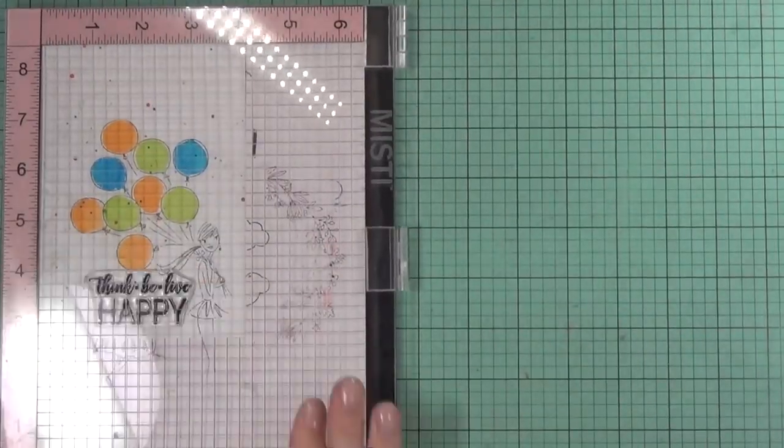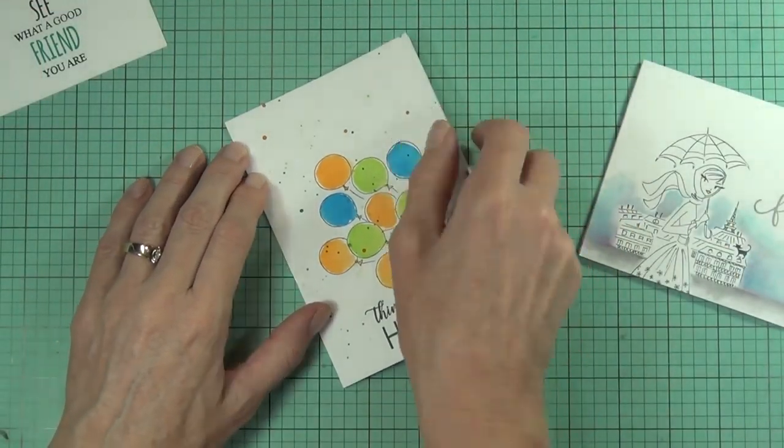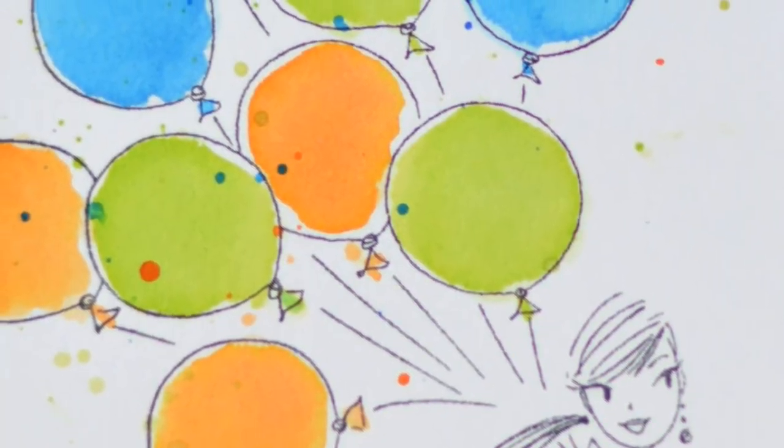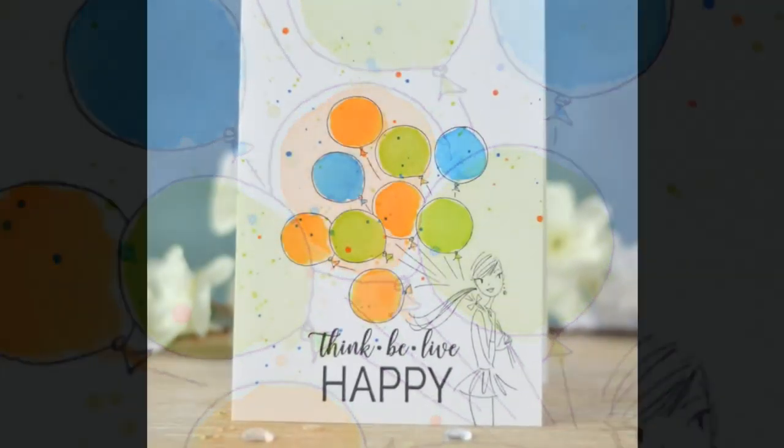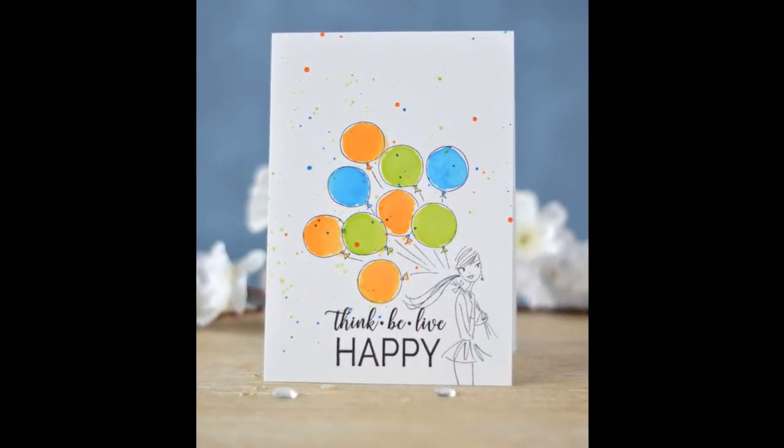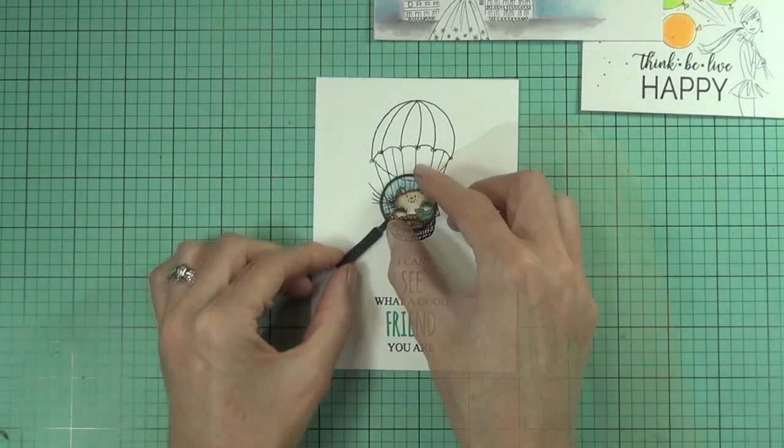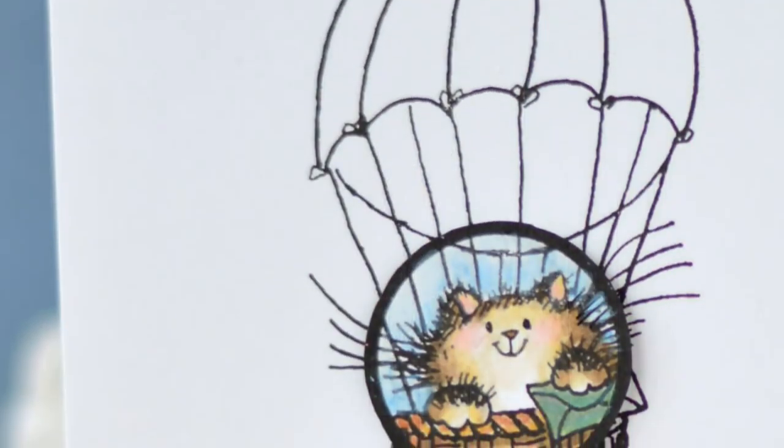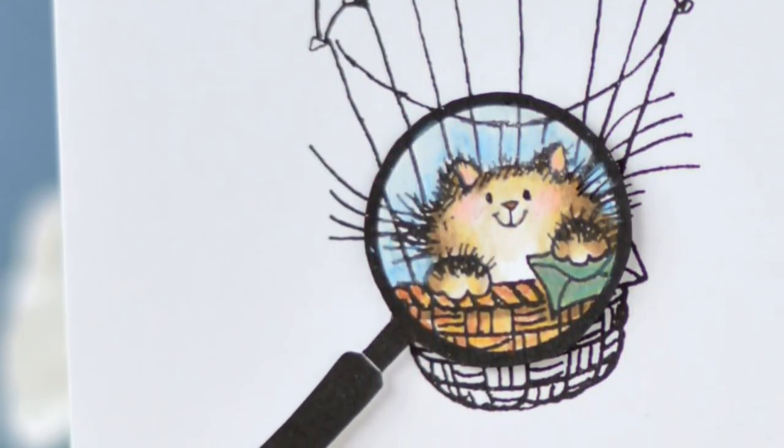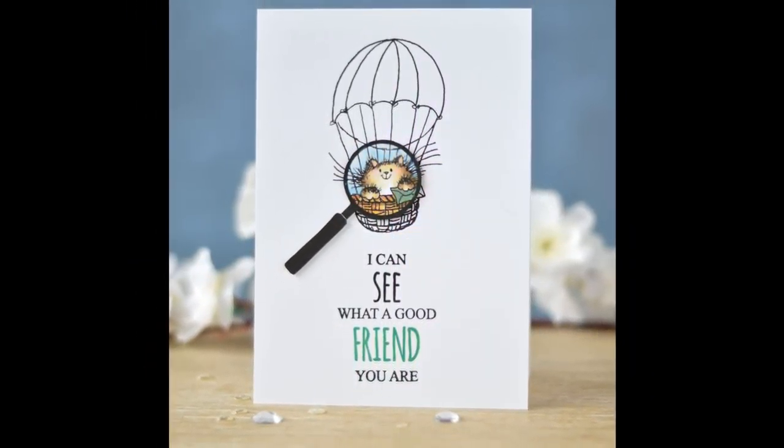I grabbed a sentiment from the same set for the birthday balloons image. I didn't bother adding any sequins to this one because I thought the splatters added that kind of party feel and I didn't want to lose them. Now we're up to the very last card. All I did was fussy cut out the magnifying glass and popped it up with some fun foam over top of the image. That's all of my cards for today. Thanks so much for joining me till next time, bye.